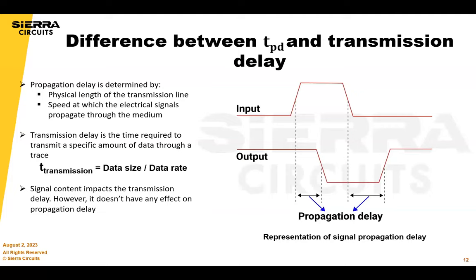The difference between propagation delay and transmission delay: propagation delay is determined by the physical length of the transmission line and the speed at which the electrical signal propagates through the medium, whereas transmission delay is the time required to transmit a specific amount of data through a trace. To calculate transmission delay, divide the data size by the data rate. Signal content impacts transmission delay but does not have any effect on propagation delay.